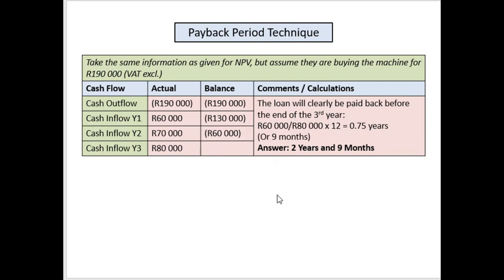For the test or exam, you can stop at 0.75 — it's a fill-in value and you need to stick to it. However, 0.75 of a year is three quarters, and three quarters of 12 months is nine months. So the full answer is two years and nine months, but for calculation purposes your answer is 2.75 years.